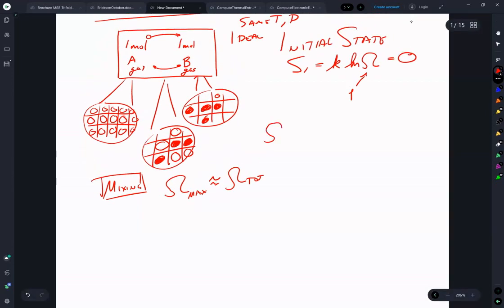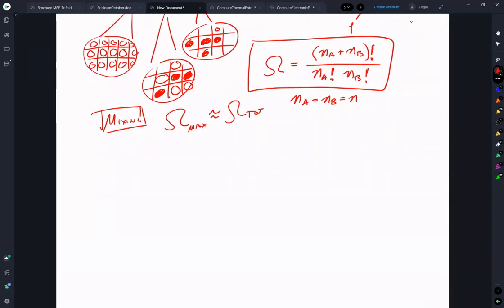And we know from lecture and from the Gaskell textbook that this can be written NA plus NB factorial over NA factorial and B factorial where A is the number of A items to be put in the lattice. B is the number of B items to be put in the lattice. And in this case, we have NA equals NB and we'll just call that N. So case one, NA equals NB equals N.